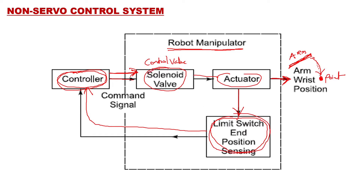When the solenoid valve is activated, it gives a signal to the actuator and the task starts. Once the arm reaches a particular position, the limit switch is activated and sends a signal to the controller. The controller then deactivates the valve; the valve signals the actuator and the arm movement stops. This process is repeated until all steps in the program are completed. This is the open loop non-servo control system.